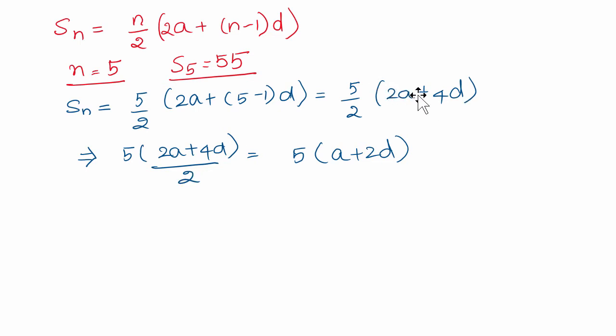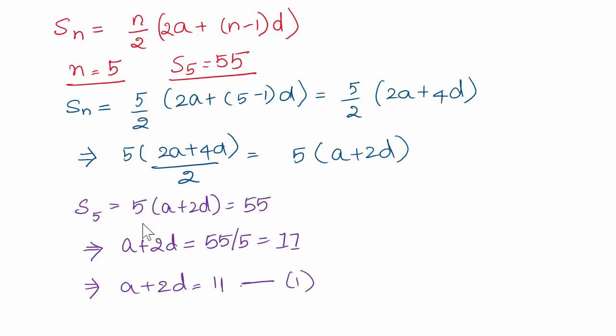But 2a and 4d both are divisible by 2. If we divide 2a and 4d, you get a plus 2d multiplied by 5. So, sum of 5 terms is actually 5 times a plus 2d. So S of 5, which is 5 times a plus 2d equals 55.